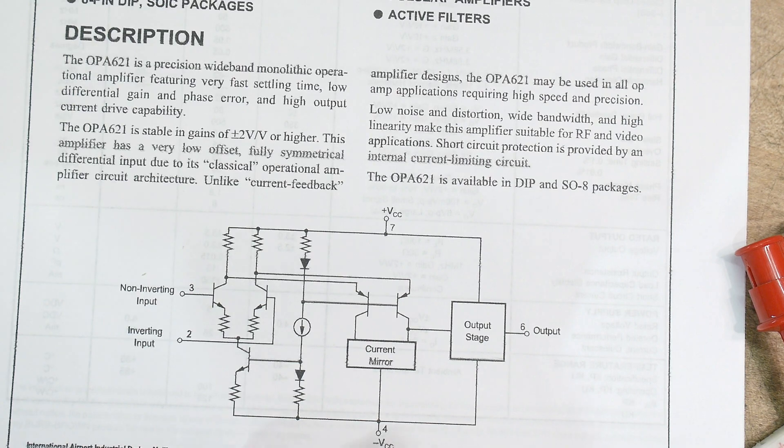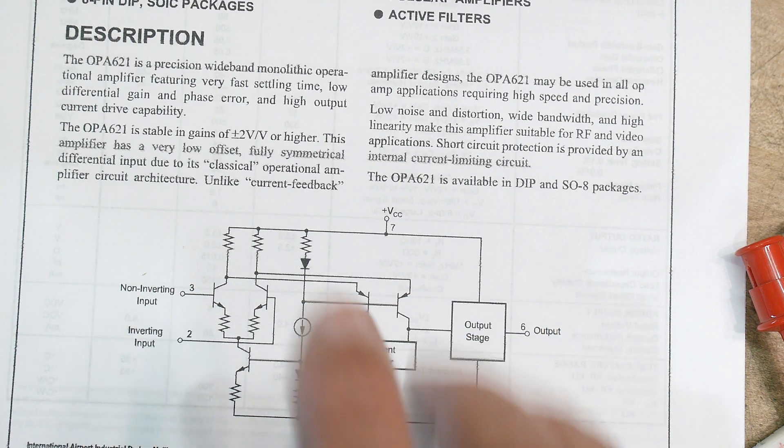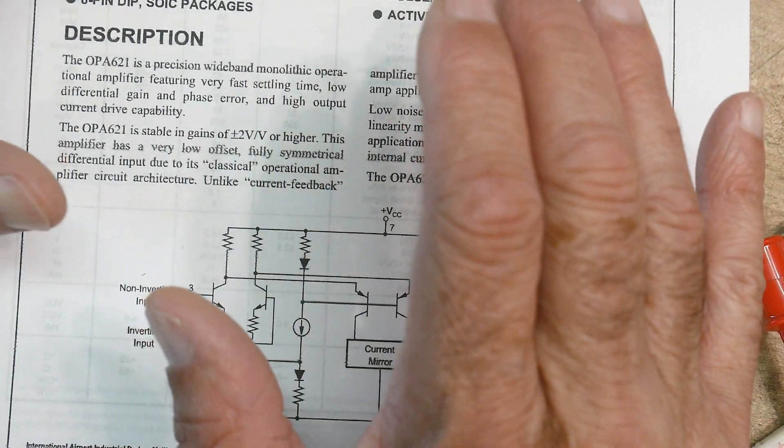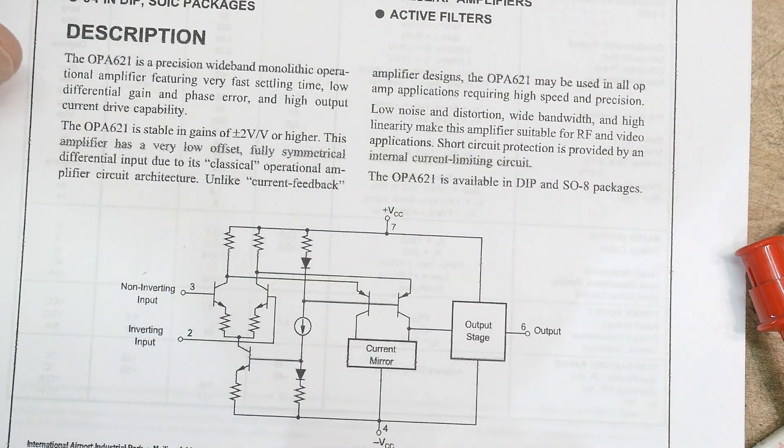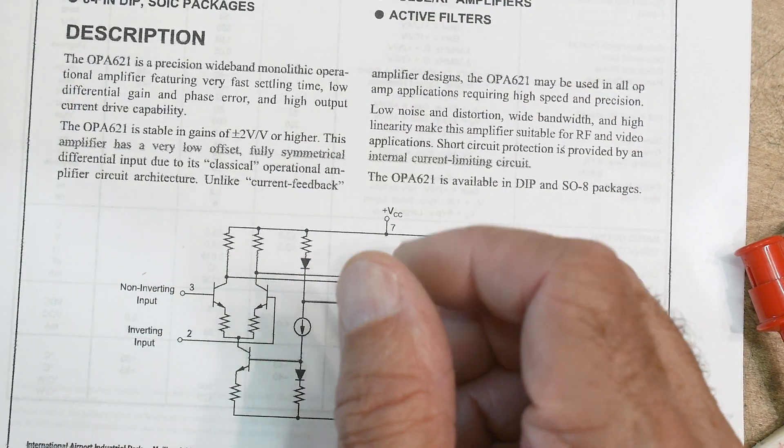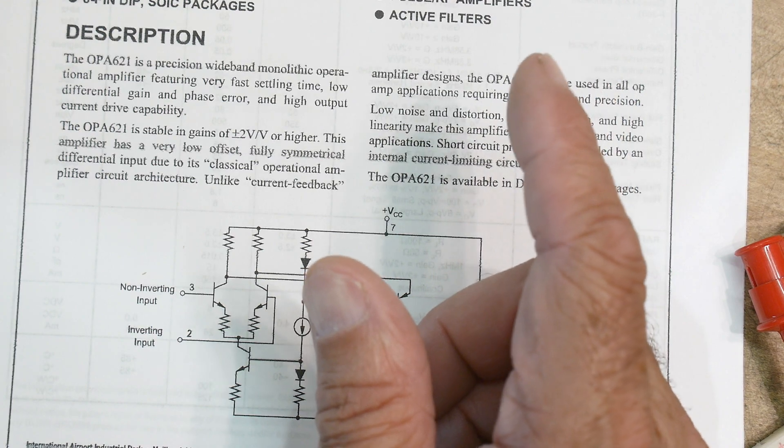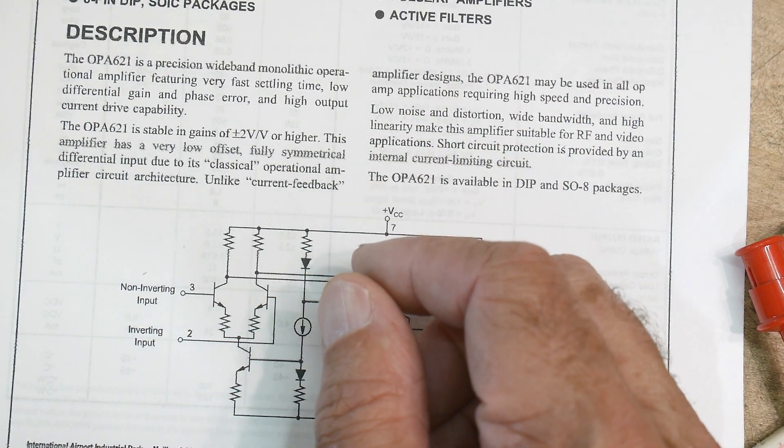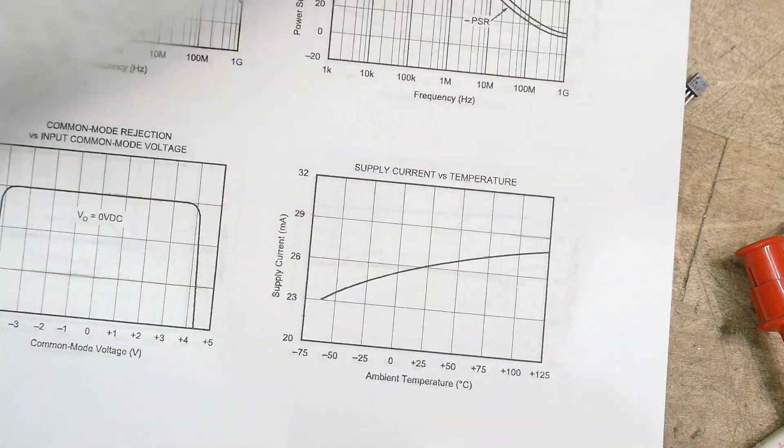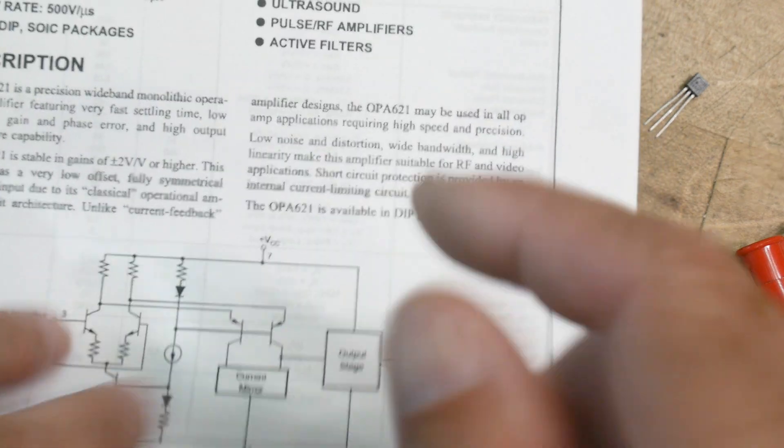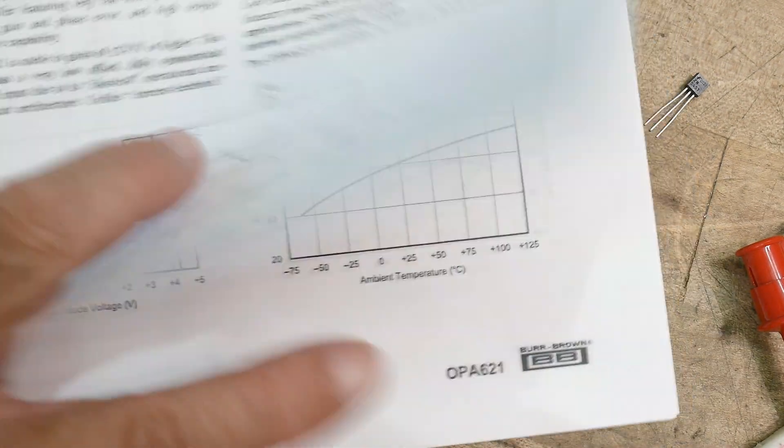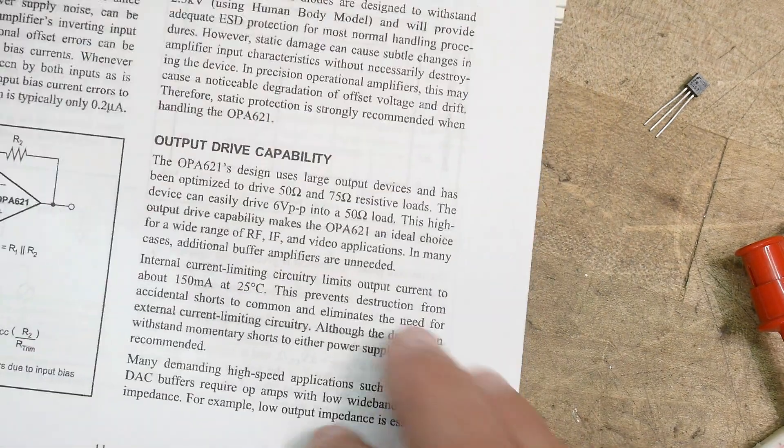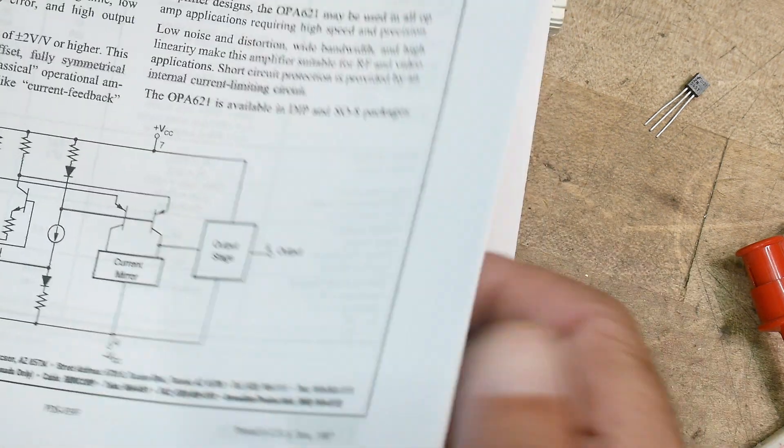Big word of warning: if you get one of these, and they're probably going to be expensive, do not treat it like a regular op-amp. Do not put plus or minus 12 volts on it—you will destroy it. The device has plus V, minus V, so you're thinking plus minus 12 or 15...